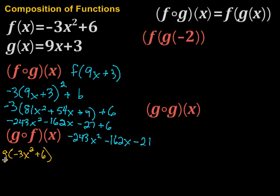Then that means I'm going to put this thing into the g function for x. So that gives me 9 times negative 3x squared plus 6, then plus 3. So all I did was replace the x right up here with this thing.